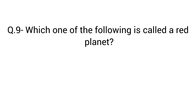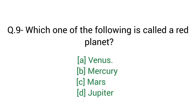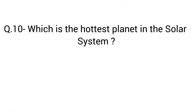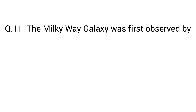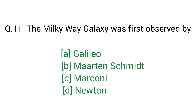Question number 9: Which one of the following is called a red planet? Right answer C — Mars. Question number 10: Which is the hottest planet in the solar system? Right answer C — Venus. Question number 11: The Milky Way galaxy was first observed by? Right answer A — Galileo.